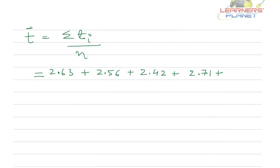The mean value for the time is t bar, which is the summation of all the individual times divided by total number of observations. So, the first reading is 2.63, second reading is 2.56, third reading is 2.42, fourth reading is 2.71 and fifth reading is 2.80. We have to add all of them first.